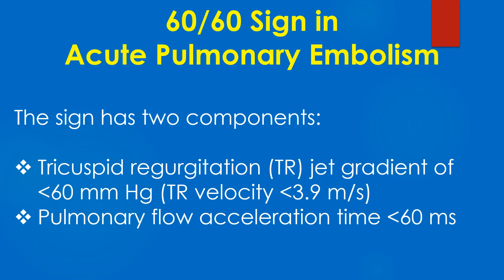The sign has two components: first, a tricuspid regurgitation jet gradient of less than 60 mmHg; and second, a pulmonary flow acceleration time of less than 60 ms.